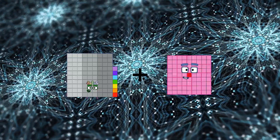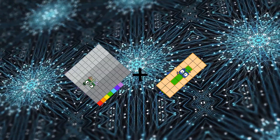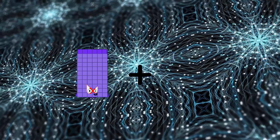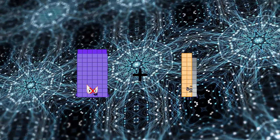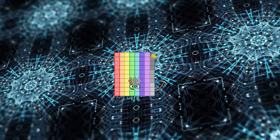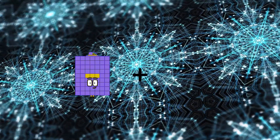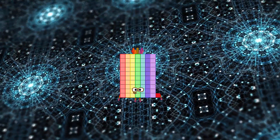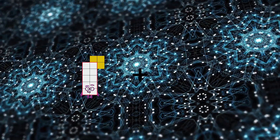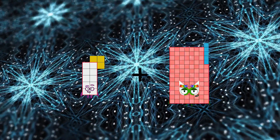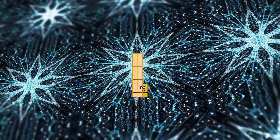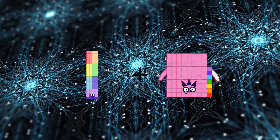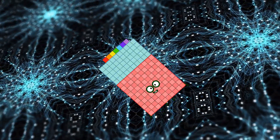97 plus 24 equals 121. 66 plus 13 equals 79. 63 plus 8 equals 71. 13 plus 10 equals 23. 76 plus 81 equals 157.